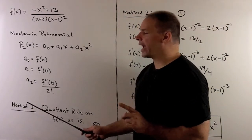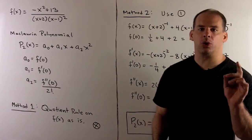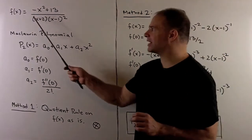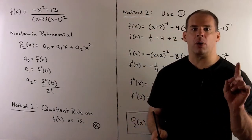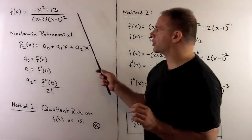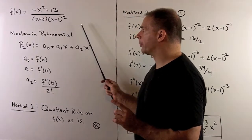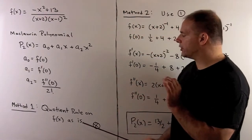First method we could try: we just apply the quotient rule twice to f(x) as is. That's going to be a bad direction to go in, because you can see this is going to involve a lot of work. So we're not going to do it that way.